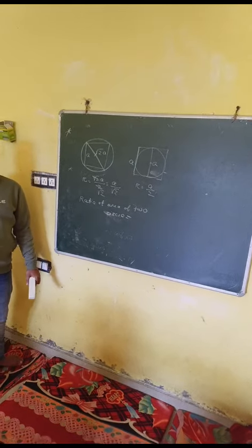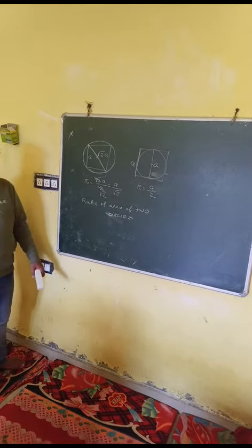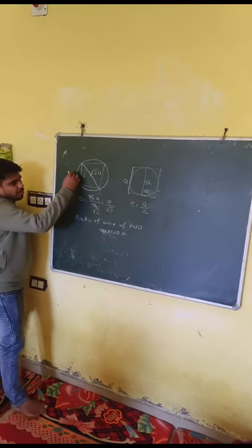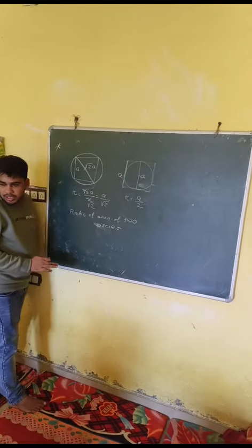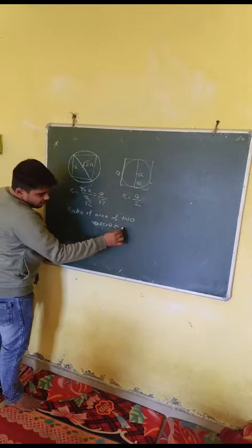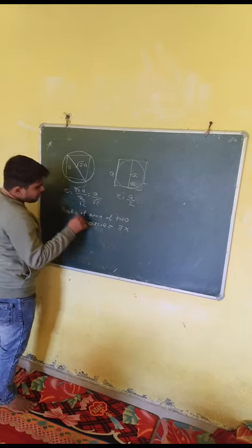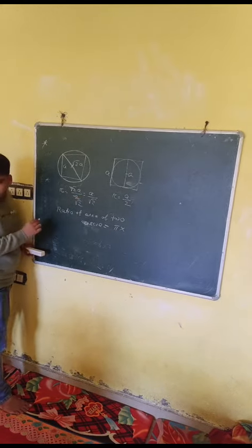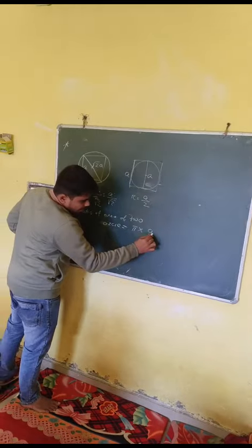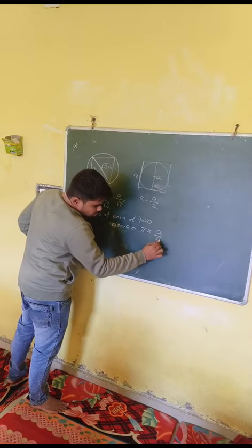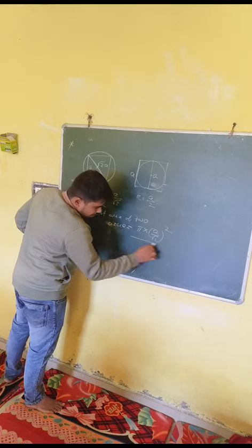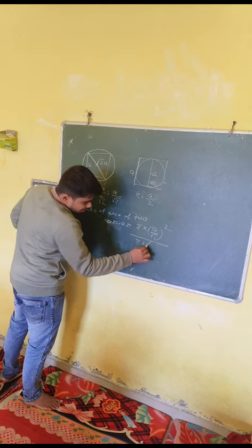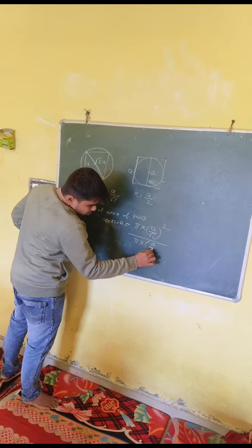The area of the circle is pi R squared. So that gives us pi into A by 2, squared.